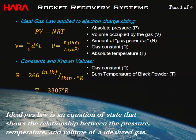Moving on to the ideal gas law. This is an equation of state showing the relationship between pressure, temperature, and volume of an idealized gas: PV = nRT, where n is the amount of the gas generator — in our case, black powder — R is the universal gas constant, and T is the absolute temperature. We'll use the combustion temperature of black powder as our temperature constant.